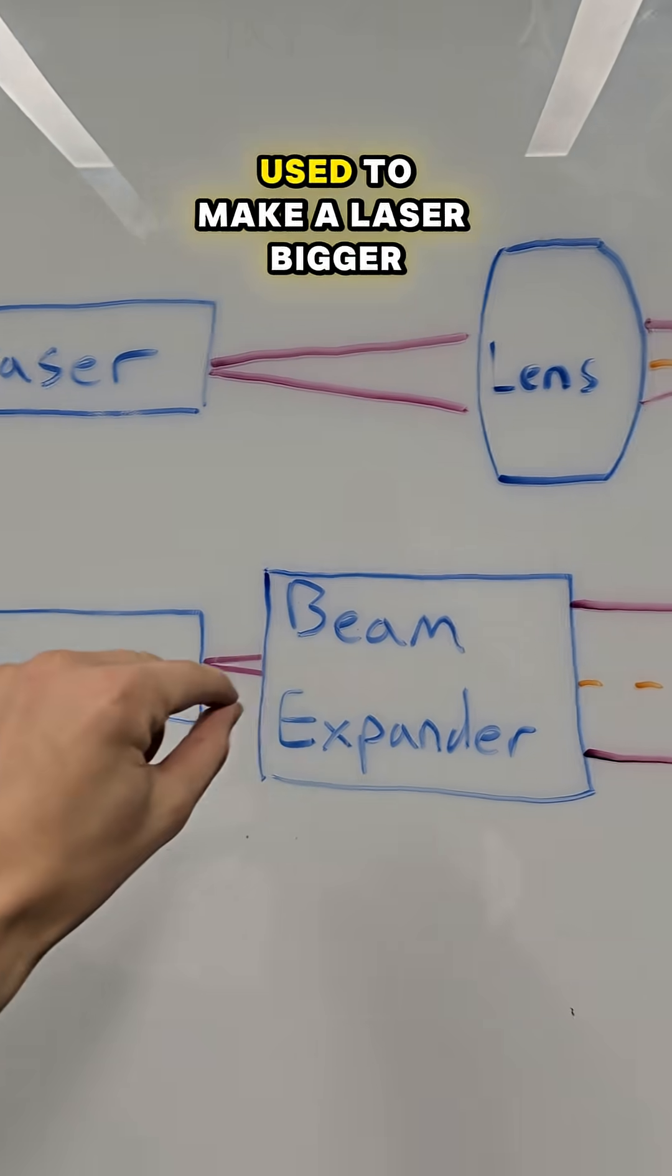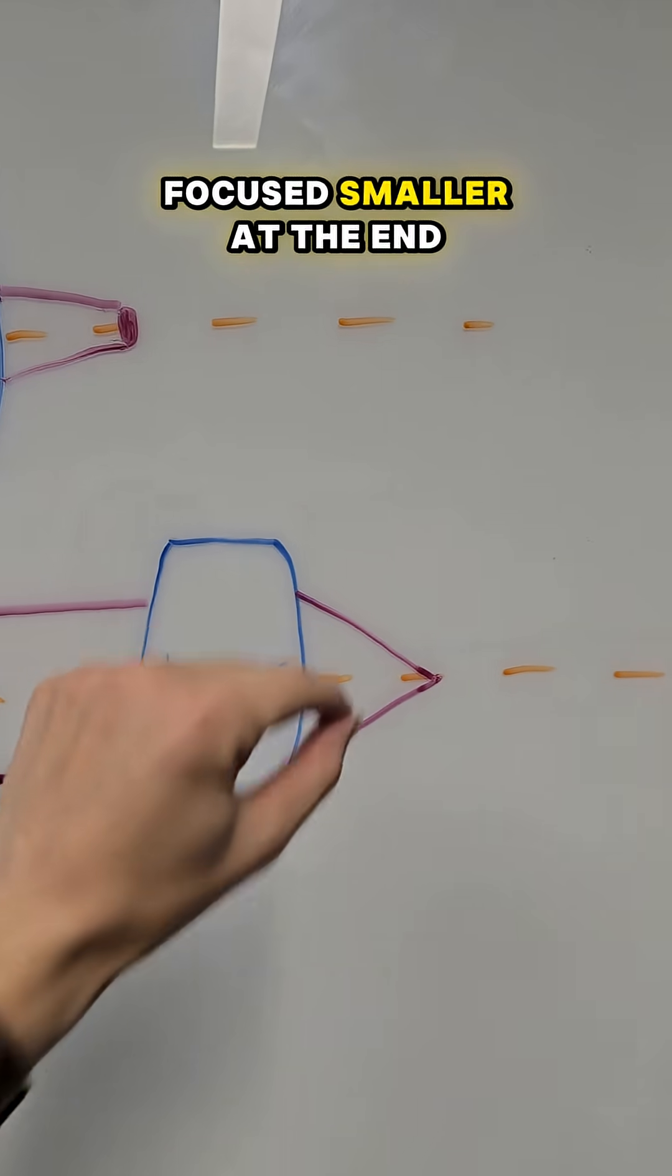So a beam expander is used to make a laser bigger so that it can be focused smaller at the end.